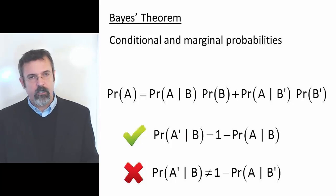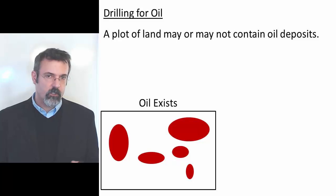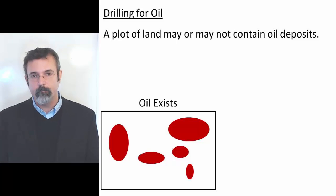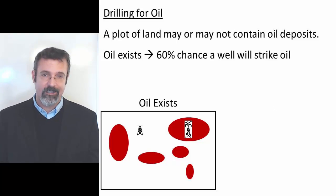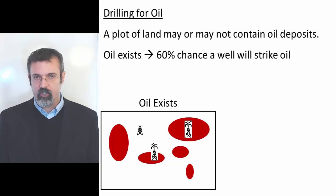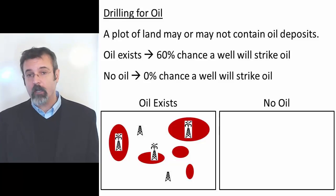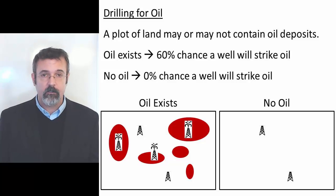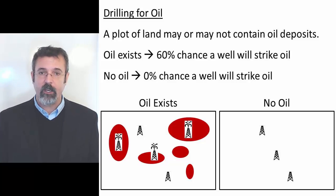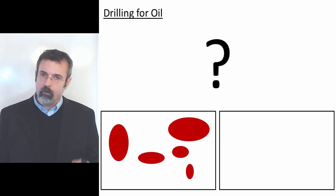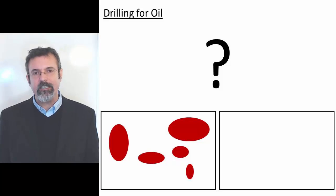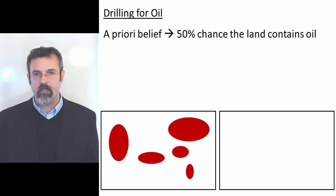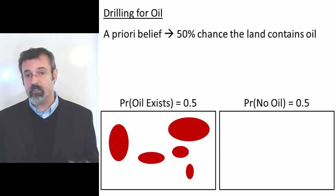So with these equations let's consider a problem. You work for an oil company and your company has a plot of land that may or may not contain oil. If the land does contain oil, when you drill a well on that land there's a 60% chance that the well will strike oil. If the land does not contain oil, then the probability of the well striking oil is 0. You don't know whether the land contains oil, but let's suppose you believe there's a 50% chance that the land contains oil. We call this an a priori belief, or an assumption from which we start our calculations.